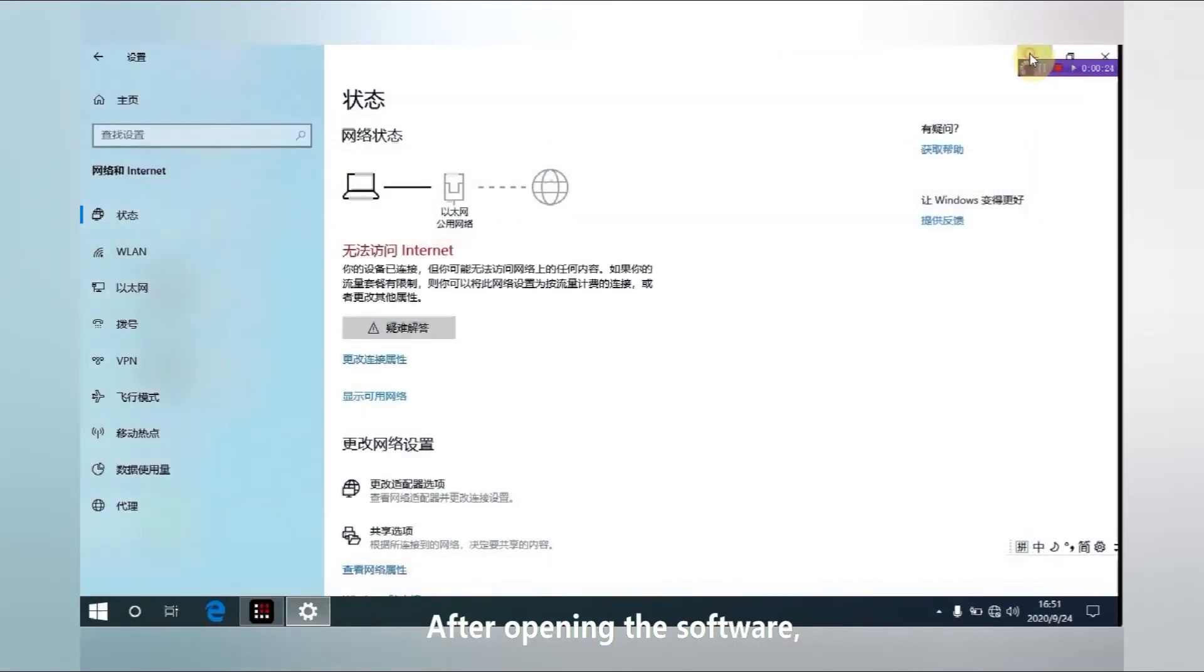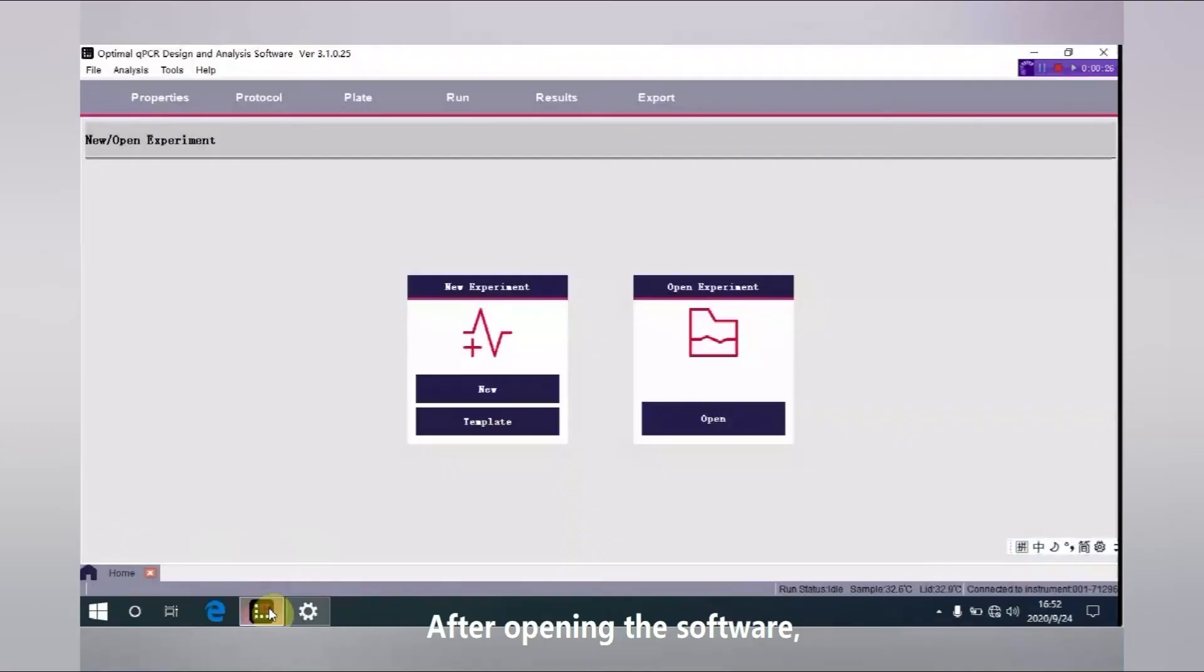After opening the software, if it shows that the instrument has been connected, as well as the running status and serial number at the lower-right corner, it means the instrument is connected to the computer normally, and the experiment could be carried out.